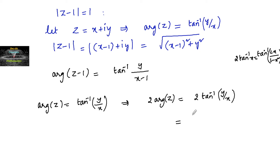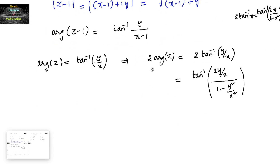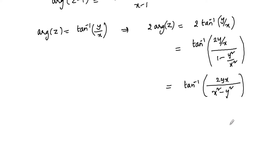So we can write tan inverse of (y/x + y/x), that is 2 times y upon x, divided by 1 minus (y/x) squared, that is y squared by x squared. This simplifies to tan inverse of 2y multiplied by x, so 2xy divided by x squared minus y squared.